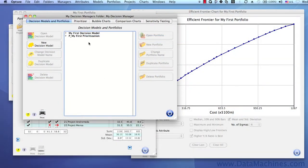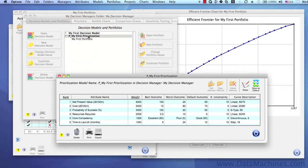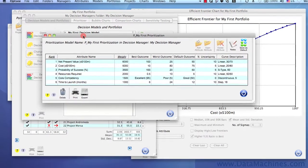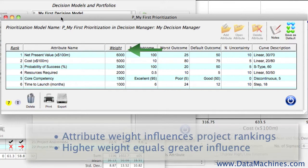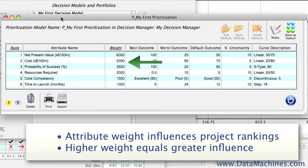So, let's take a look first at model uncertainty. When we open up the decision model form, we can see that each attribute has a weight associated with it, and that the weight designates the relative influence on the project rankings in the portfolio. The higher the weight, the greater the influence. For example, an attribute with a weight of 2,000 has twice the influence as an attribute with a weight of 1,000.